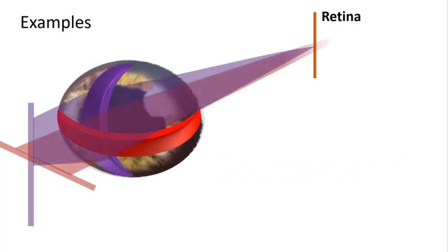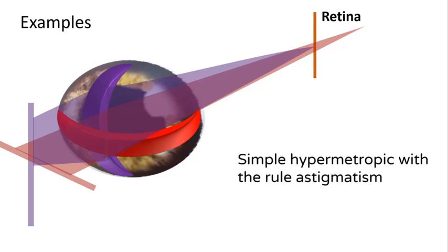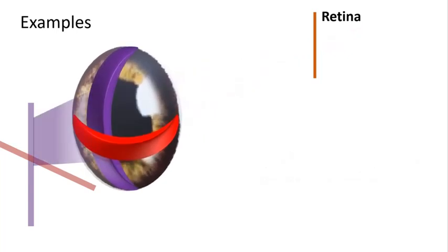Here: one meridian focuses on the retina, so it is simple astigmatism. The other focuses behind, so it is hypermetropic. The vertical meridian is more myopic, so it is with the rule. This is a case of simple hypermetropic with-the-rule astigmatism.